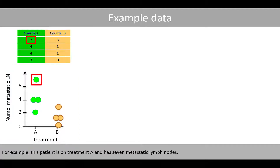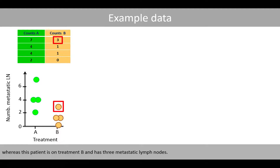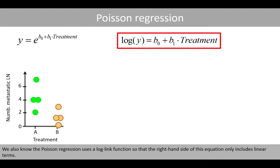For example, this patient is on treatment A and has seven metastatic lymph nodes, and this patient is also on treatment A and has two metastatic lymph nodes, whereas this patient is on treatment B and has three metastatic lymph nodes. From the first lecture, we know that Poisson regression is based on an exponential model, and uses a log-link function so that the right-hand side of the equation only includes linear terms.